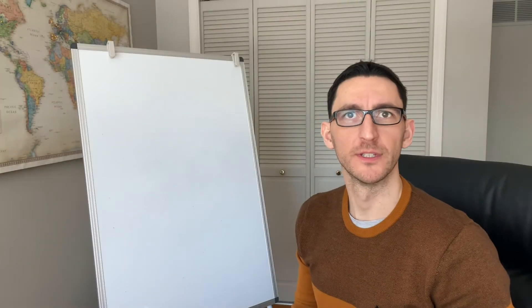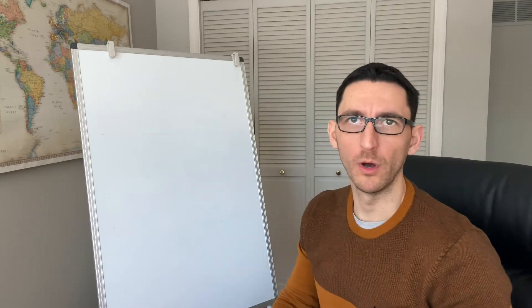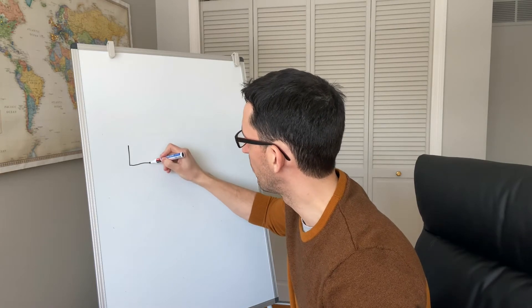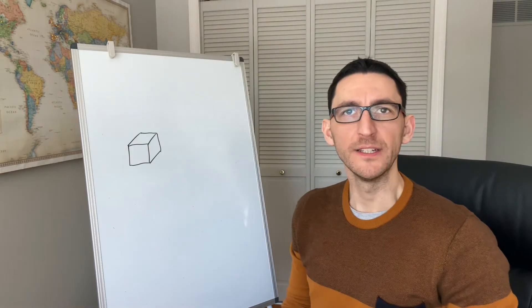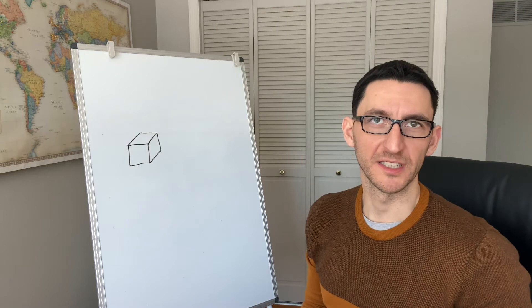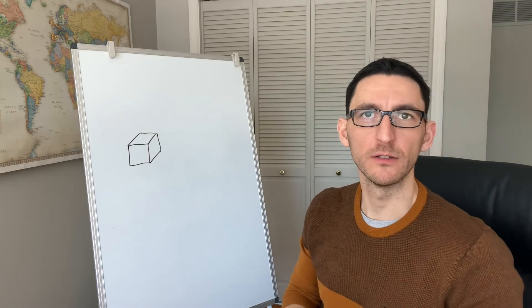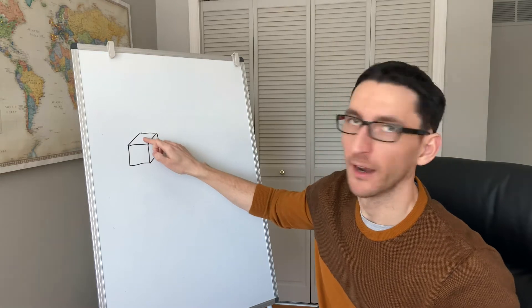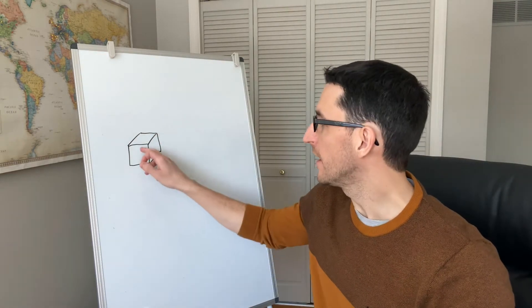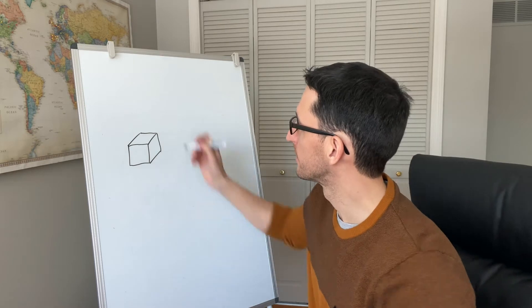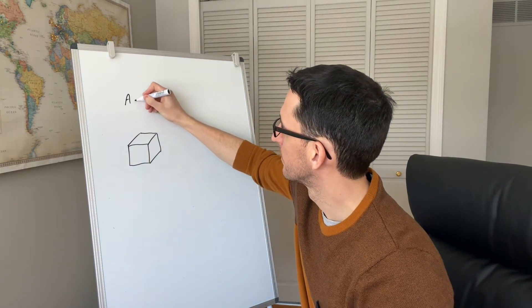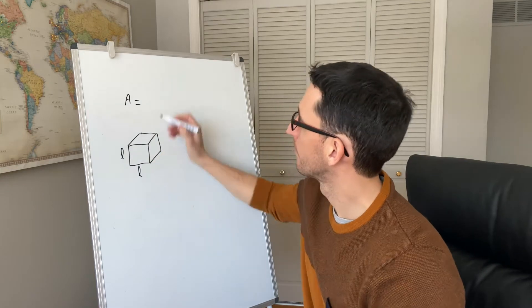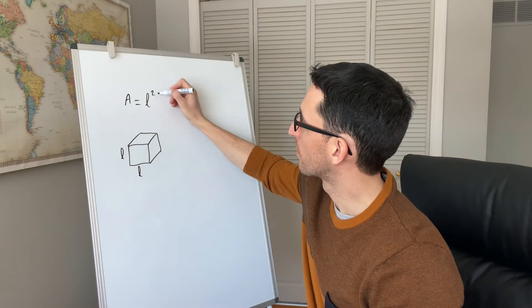Let's get back to our cubes and start with a simple cube of one by one by one. If I draw it on the board, it will be one by one by one. Calculating the cross-sectional area of the cube is actually very simple. It's just calculating the area of one of the faces, and the area of a cube is simply its length to the power of 2.